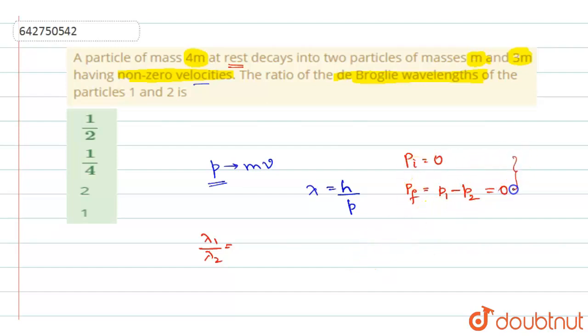That should happen to have a conservation of momentum, right? So you can say that since the initial momentum is 0, to get final momentum 0, the two particles should have momentum which are equal and opposite, and that is why lambda 1 by lambda 2 will be equal to 1.